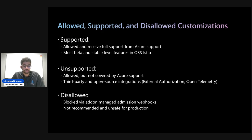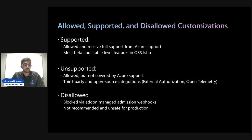This is common for various third-party and open source integrations — for example, external authorization using Open Policy Agent, or telemetry collection and processing with OpenTelemetry. The third category is disallowed: these are blocked outright by add-on managed admission webhooks. These are not recommended and are unsafe for production and should be avoided at all costs, as they are not covered at all by Azure support.